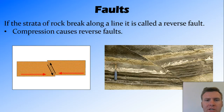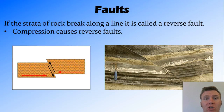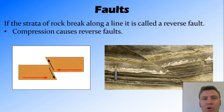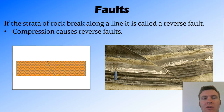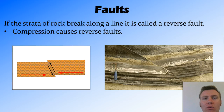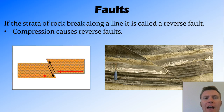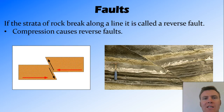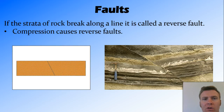The opposite of a normal fault is called a reverse fault. A reverse fault occurs because of compression forces — a squeezing force. A fault line breaks into the rock, and the squeezing together causes one rock to rise over the other rock.